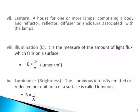Next, lantern: a housing for one or more lamps comprising a body and reflector, diffuser, or enclosure associated with the lamps. Next, illumination, denoted by capital I: it is the measure of the amount of light flux which falls on a surface, given by phi divided by area, and its unit is lumen per square meter. Next, luminance or surface brightness: the luminous intensity emitted or reflected per unit area of surface is called luminance, given by I divided by A.